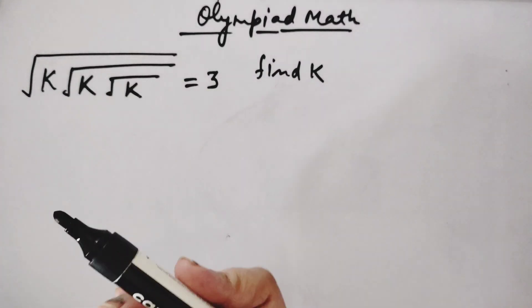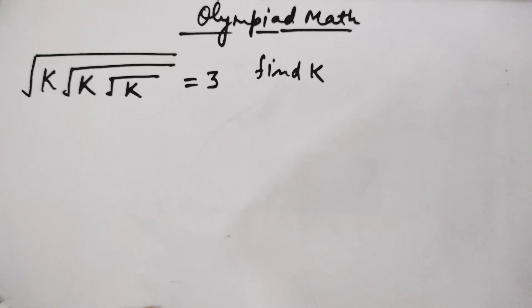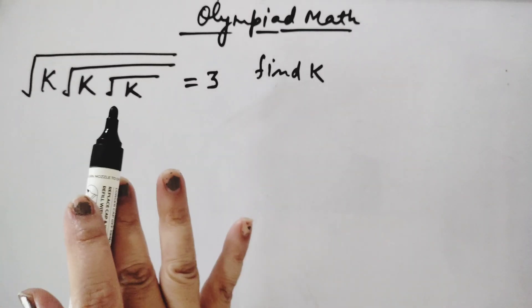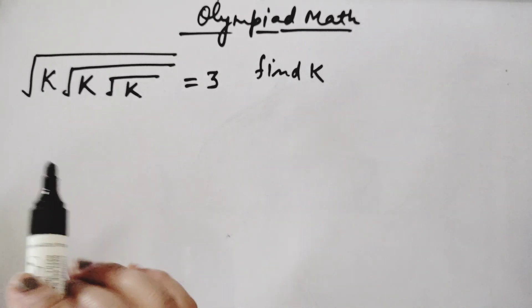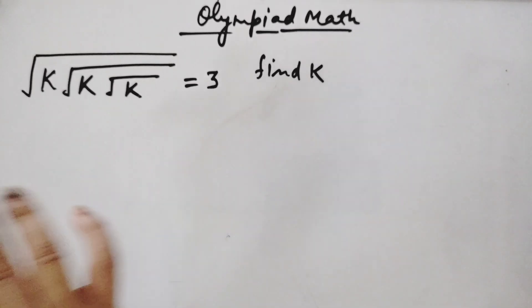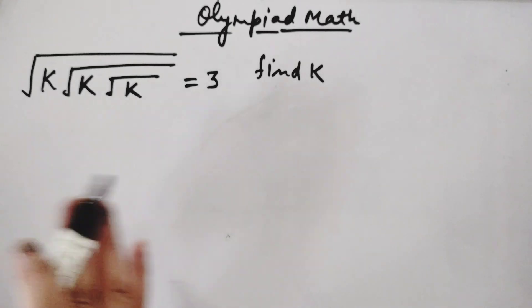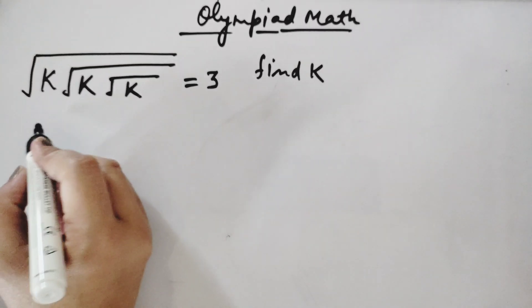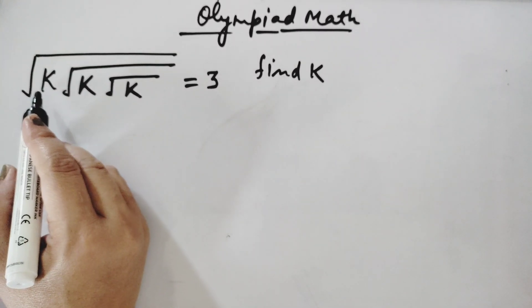So how to do this question? First of all, we will remove this square root one by one. We will do squaring on both sides in the first step.